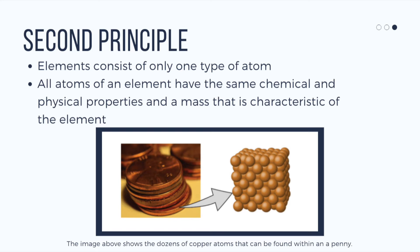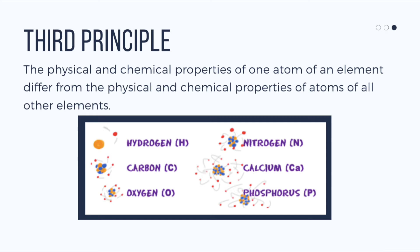The third principle states that the physical and chemical properties of one atom of an element differ from the physical and chemical properties of all other atoms and other elements. Essentially, the physical and chemical properties of atoms that make up hydrogen are different from the physical and chemical properties that make up carbon.